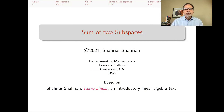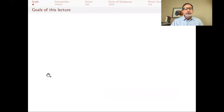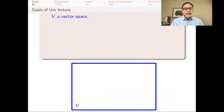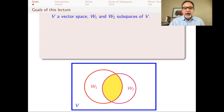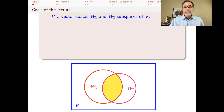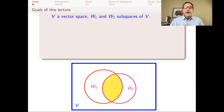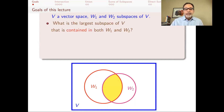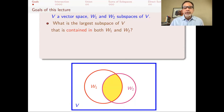Let's get started with the questions that animate this lecture. Let's say that V is a vector space — we have talked about general vector spaces in previous lectures — and we have two subspaces of V, W1 and W2. Each of these are vector spaces in their own right, using the same addition and scalar multiplication of V. The first question is: what's the largest subspace of V that's contained in both W1 and W2?